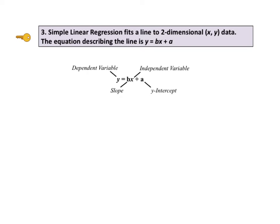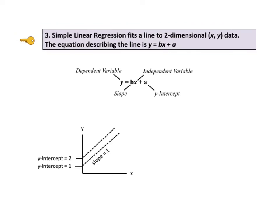Key to understanding number three says simple linear regression fits a line to two-dimensional xy data. The equation describing the line is y = bx + a. Y is the dependent variable and x is the independent variable. B is the slope and a is the y-intercept. The diagram at bottom left shows two lines with a slope of 1. One line has a y-intercept of 2, the other has a y-intercept of 1. The y-intercept, or just intercept, denoted by the constant a, describes where the line intercepts the y-axis. It is the value of y for which x equals 0.